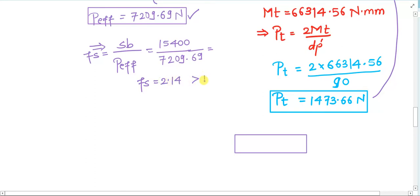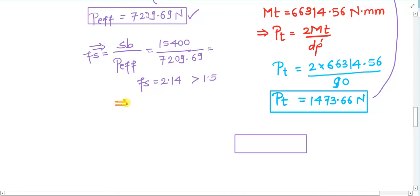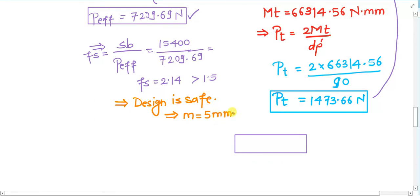This value of 2.14 is greater than the specified factor of safety of 1.5 from the problem statement. Therefore, the remark is: design is safe. The parameters satisfy the design conditions based on beam strength, and the module of 5 mm is confirmed correct.